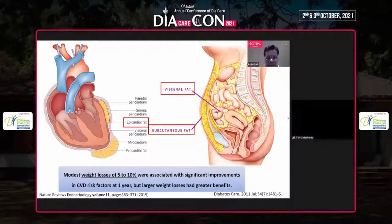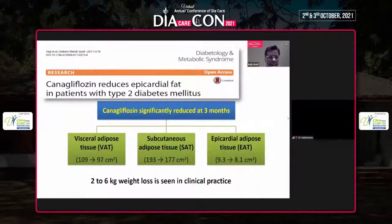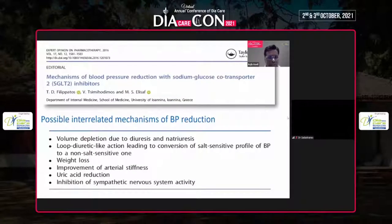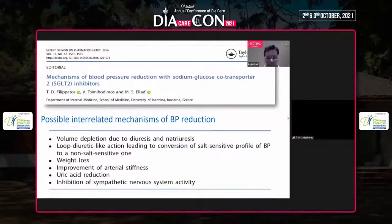Data presented in 2017 suggests that canagliflozin reduces visceral adipose tissue more compared to subcutaneous adipose tissue, and a two to six kilogram weight loss is seen in clinical practice. Regarding blood pressure reduction, we know there's a hemodynamic effect, natriuretic effect, diuretic effect, weight loss, uric acid reduction, and probably inhibition of the sympathetic nervous system — so a lot of pathways are involved in the reduction of blood pressure.